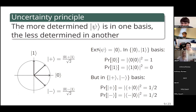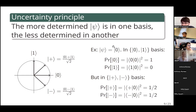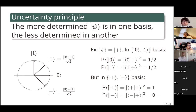Conversely, if we look at |ψ⟩ = |+⟩, this exactly switches: whereas the zero state was completely determined in the |0⟩/|1⟩ basis and completely undetermined in the |+⟩/|−⟩ basis, the plus state is completely undetermined in the |0⟩/|1⟩ basis but completely determined in the |+⟩/|−⟩ basis. To restate: the more that some state is determined in one basis, the less it can be determined in a different basis. The Heisenberg uncertainty principle refers to a particular case where one basis is the momentum basis and the other is the position basis.